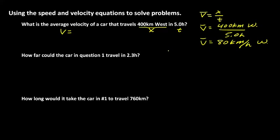The next problem refers back to that first question and says: how far could the car in question 1 travel in 2.3 hours? In this case, we're not looking for velocity — we're looking for how far the car could travel, and how far is displacement. So we're looking for displacement. We have the velocity already — 80 kilometers per hour — from the first problem. We also have a time: 2.3 hours. So we need a new equation to calculate displacement given velocity and time.